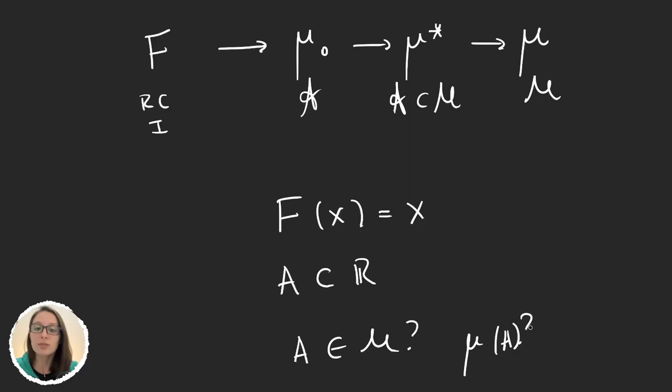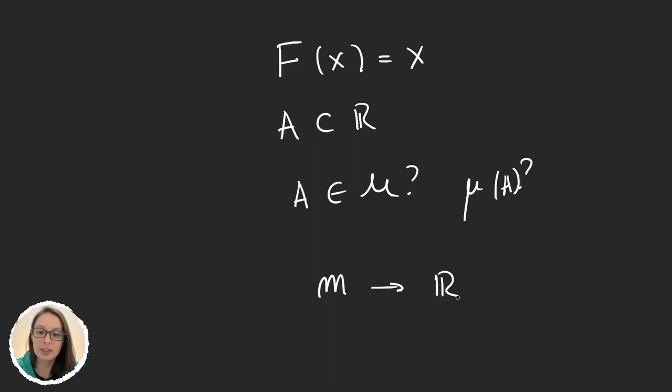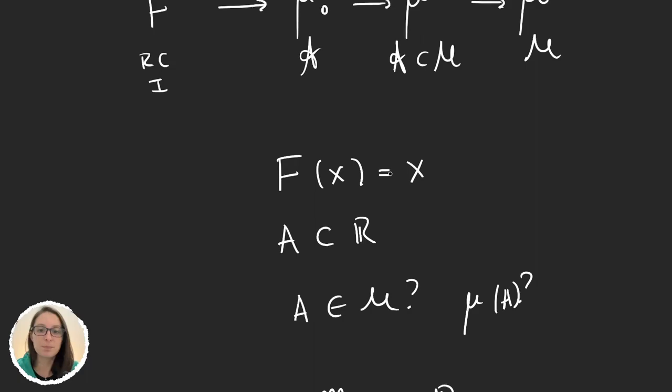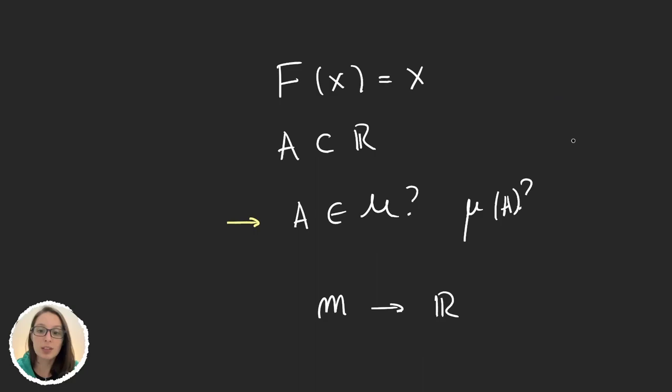So we have Lebesgue measure, and we are going to call it M. This is Lebesgue measure in the real line. This can then be extended to R^n, but we will see that in later videos. And so it's time for us to ask ourselves: what is this sigma algebra M? Because again, if I give you some random set, the first thing you have to ask yourself is whether this set is in my sigma algebra. Let's talk a bit about what M is.